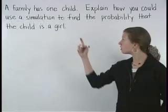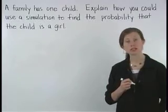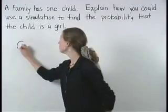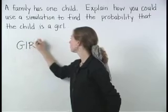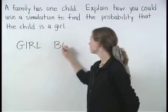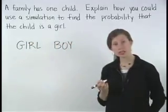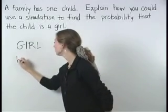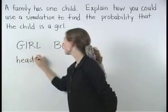There are two possible outcomes for the child, girl or boy. So we could let heads represent girl and tails represent boy.